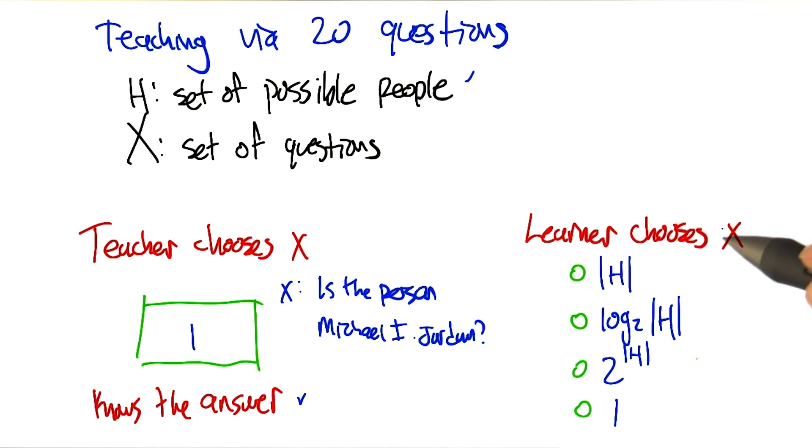So again, assuming that the learner can ask any question at once but doesn't know what the right answer is, how many questions is it going to need to ask before it has whittled down the set of possible people to just the one that is the right answer?